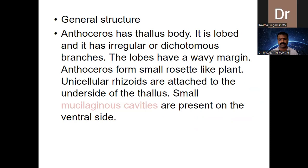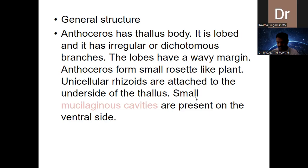It also appears just like a small rosette-like plant — the anthoceros lobes are arranged one above the other forming a rosette, just like a rose-like flower. By the wavy nature of the margin and the rosette-like arrangement of the lobes, Anthoceros can be identified very easily. It is attached to the substratum with the help of unicellular rhizoids — only one type of rhizoid.